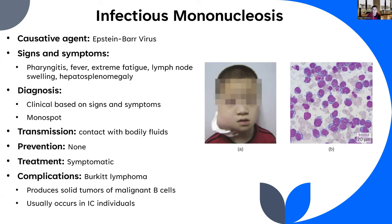Complications include an increased risk of developing Burkitt lymphoma — a type of non-Hodgkin's lymphoma — which produces solid tumors of malignant B cells, typically only in immunocompromised individuals. If diagnosed early, it is fairly treatable.